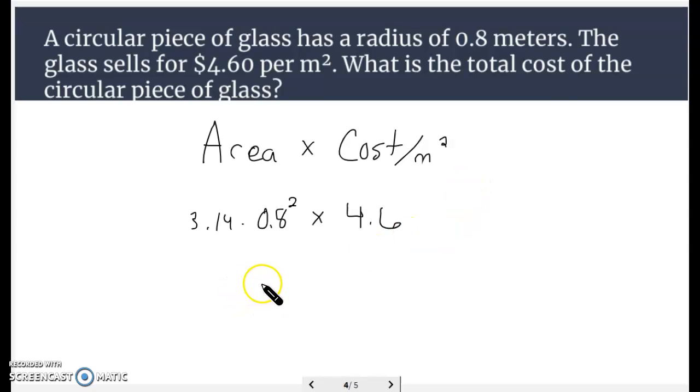It comes out to 9.24416. Round that to the nearest cent, $9.24 for that amount of glass, of a glass circular plate.